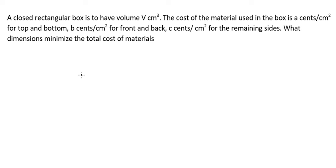Hello everybody. Today I want to talk about calculus — the topic is application of derivatives. I want to show you how to answer this problem: a closed rectangular box is to have volume V cubic centimeters. The cost of material used in the box is a cents per square centimeter for top and bottom, b cents per square centimeters for front and back, c cents per square centimeters for the remaining sides. What dimensions minimize the total cost of materials?